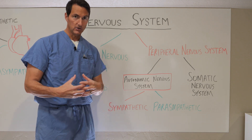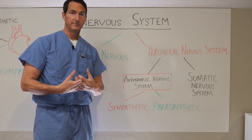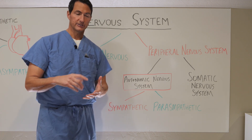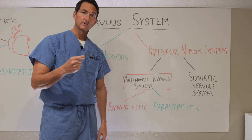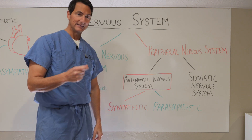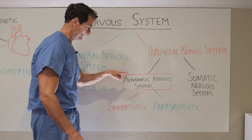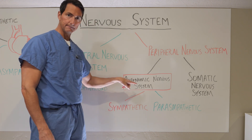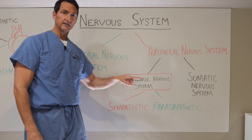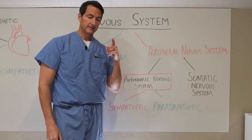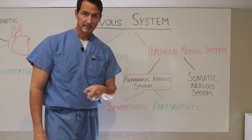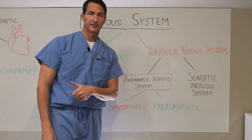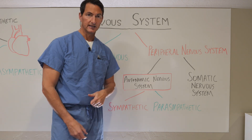I would argue that obesity, diabetes, high blood pressure, and fatty liver are driven primarily by dysfunction in the autonomic nervous system. To understand this, you need to go back and watch the first video from last time.